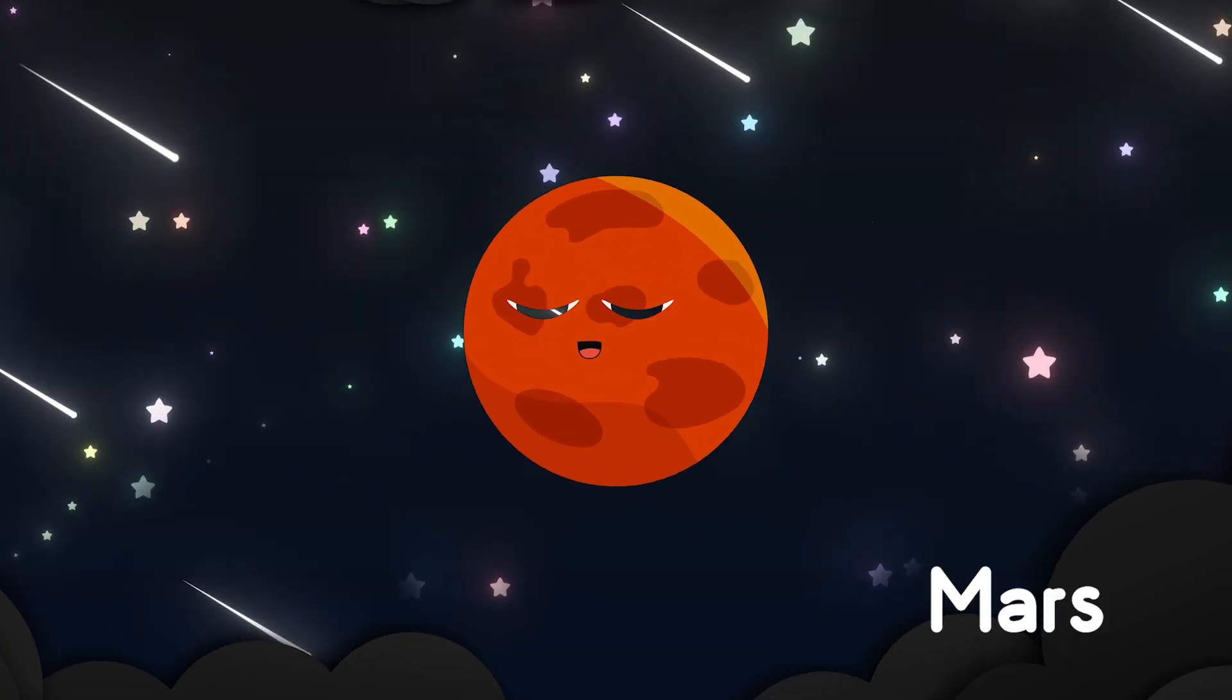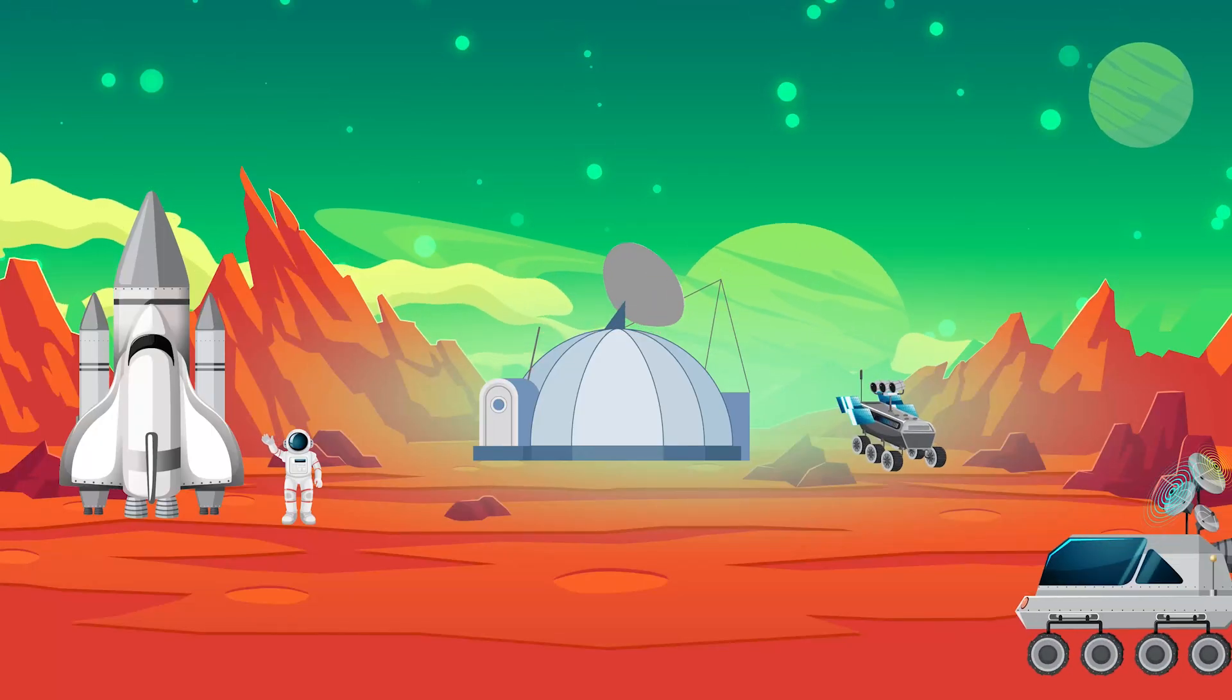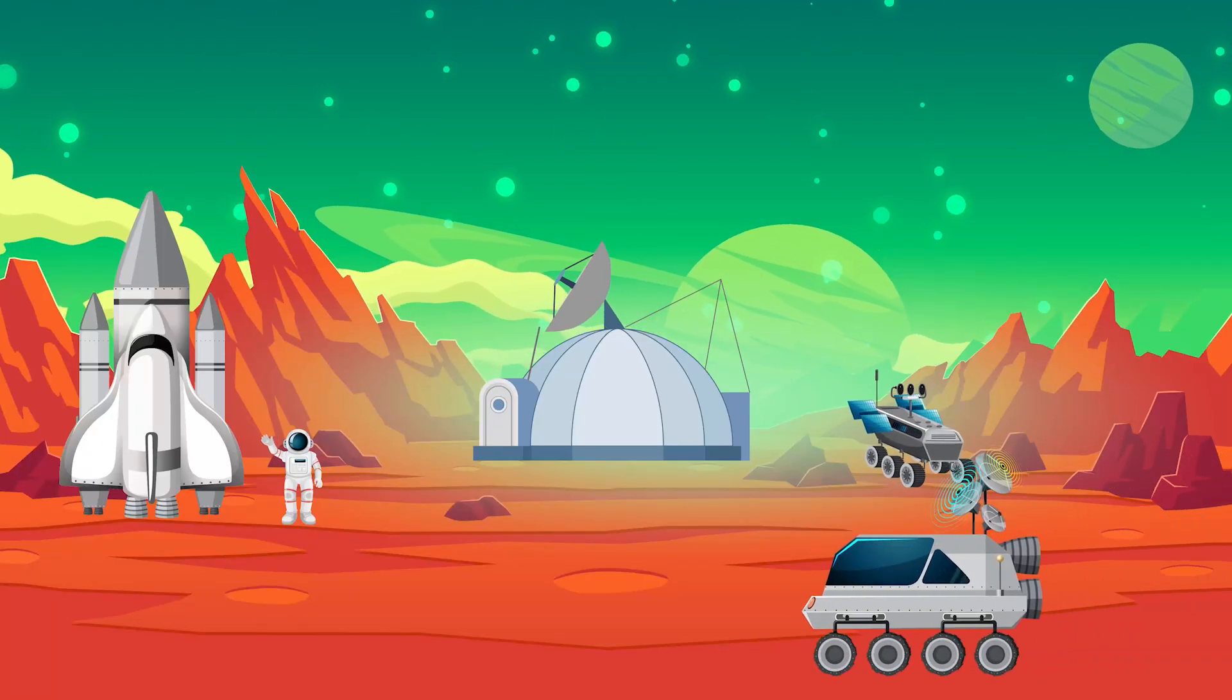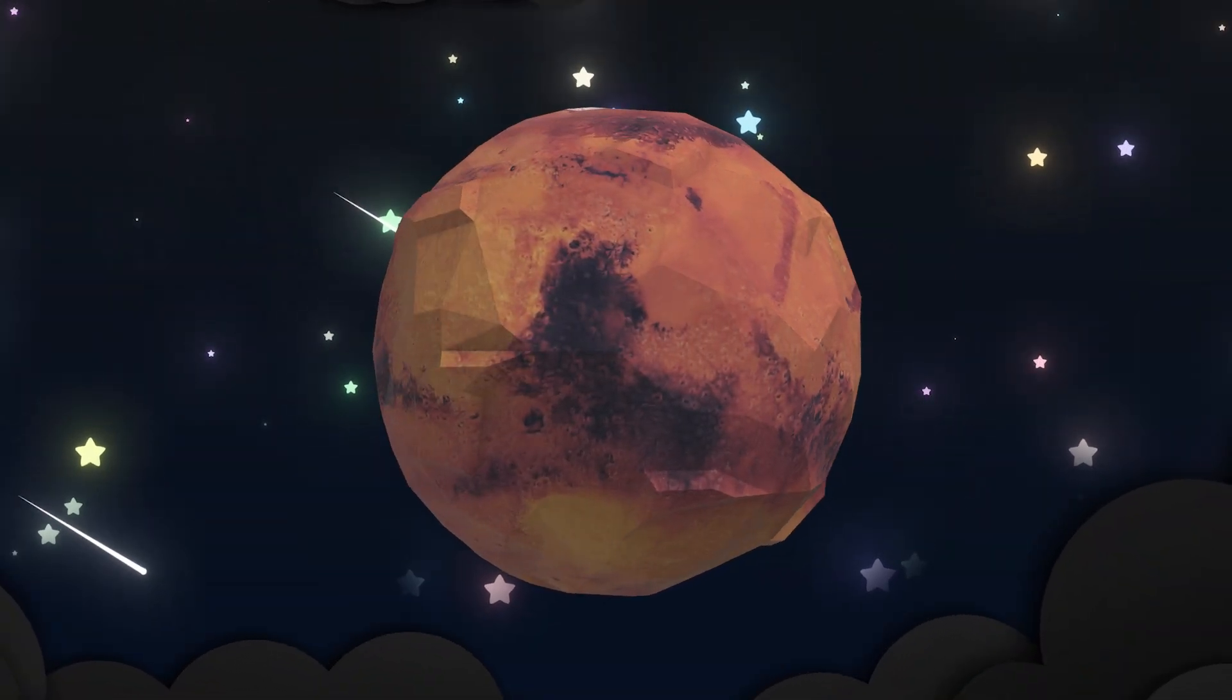Mars is dusty, red and dry, with quiet valleys reaching high. Whispers say it once held streams, now it lives in silent dreams.